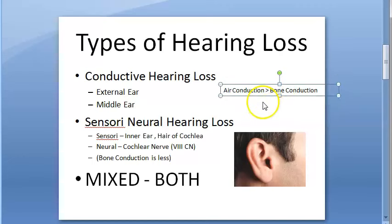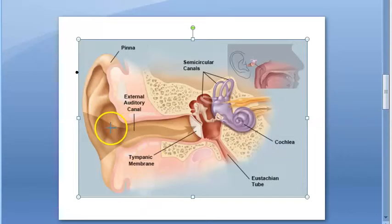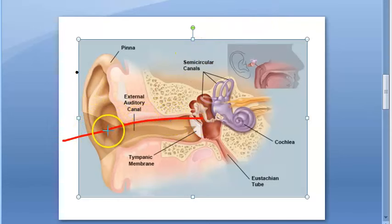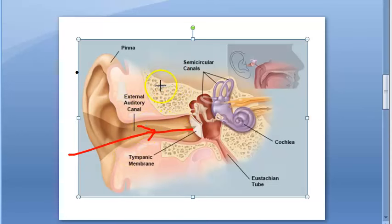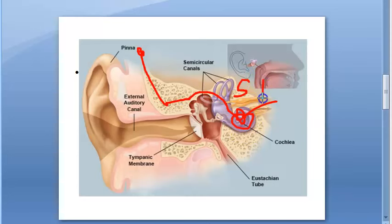Sensorineural hearing loss can be abbreviated as SNHL. When we speak, we hear our own voice via both air conduction and bone conduction. That is why our voice sounds different when recorded — because the recording captures only air conduction, while normally we also have the bone conduction component. So if bone conduction does not work for a patient, it means sensorineural hearing loss.